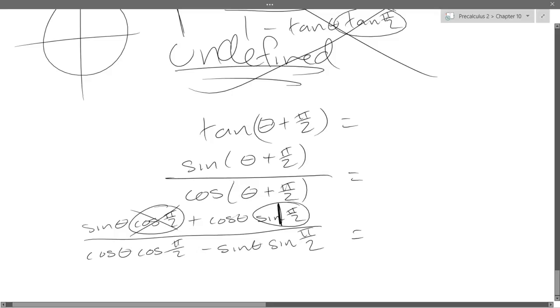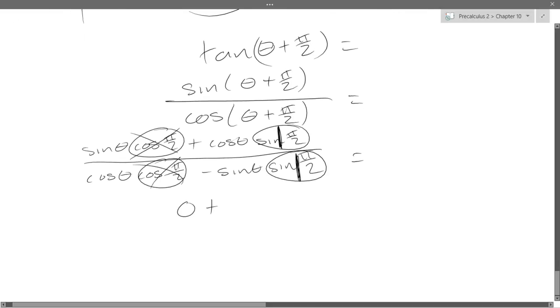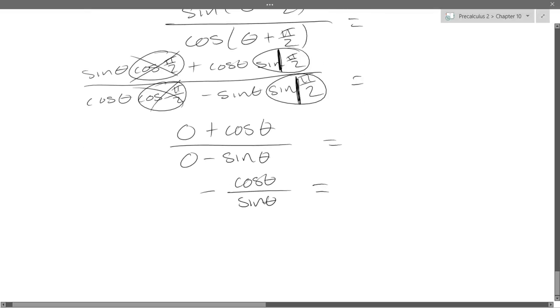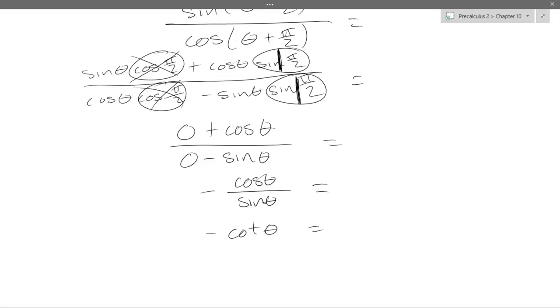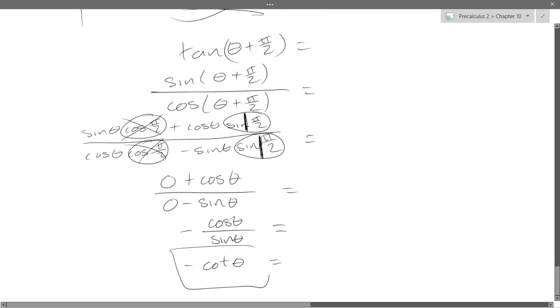And do the same thing. We've got another cos(π/2). That's going to disappear and be 0. Another sin(π/2). That's going to turn into 1. So we've got 0 plus cos(θ) divided by 0 minus sin(θ). So we have cos(θ) over negative sin(θ). So I can just write it cos divided by sine with the negative out front. And, of course, this is cotangent. And that's what we were going for originally.